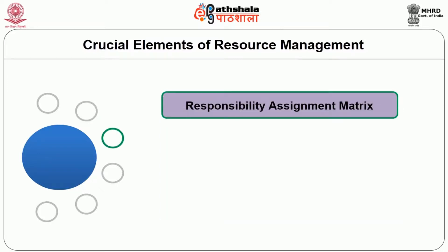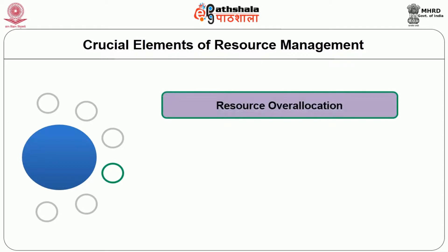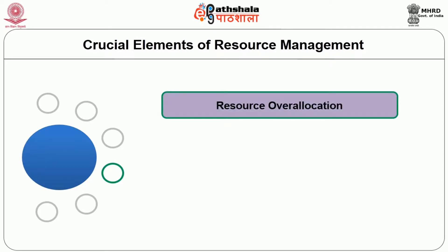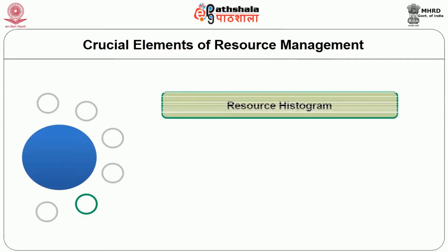Third is the Responsibility Assignment Matrix, where the resources or organizational breakdown structure meets up with the work breakdown structure to assign responsibility to the various branches in the hierarchy. Next is resource over-allocation, which occurs when a resource has been assigned more work than can be completed during normal work hours. This often leads to overtime working and overspending on financial resources.